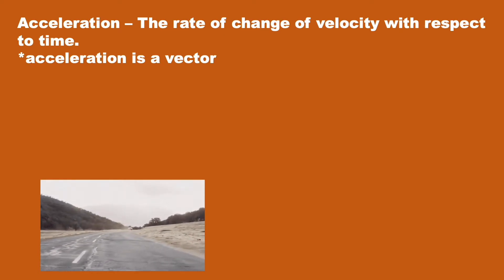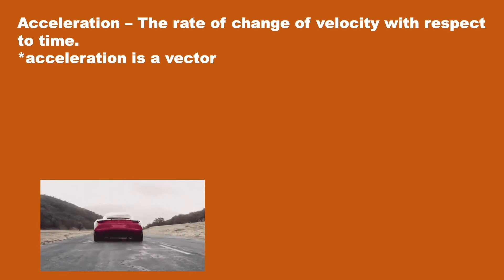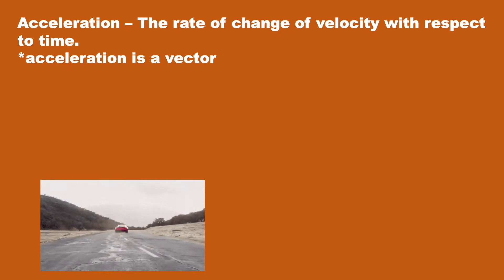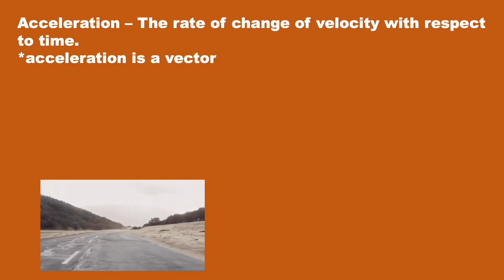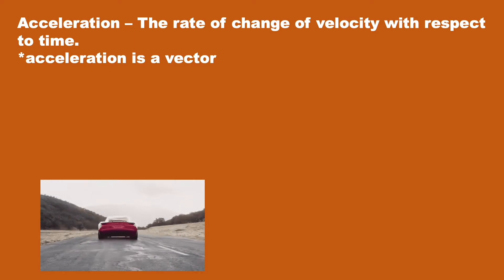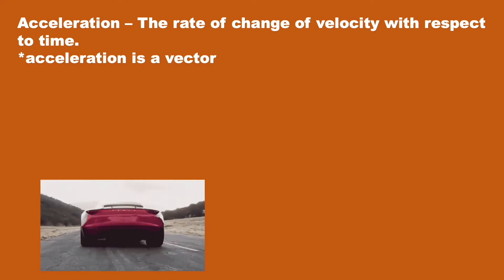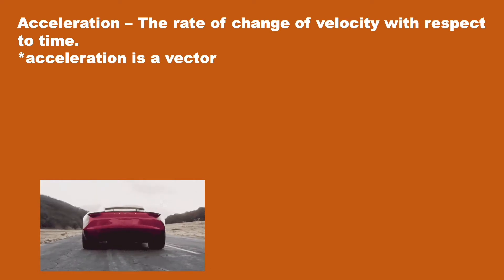When an object changes velocity, it is accelerating. The car on the bottom left — it's not moving, then it starts going faster and faster. That means its velocity is increasing, which means it's accelerating in that direction.